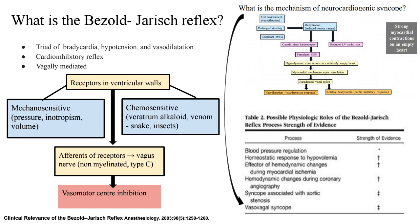What is the Bezold-Jarisch reflex? It is a cardio-inhibitory reflex which is vagally mediated. It is a triad of bradycardia, hypotension, and vasodilatation. When this reflex was first identified, it was described as a triad of bradycardia, hypotension, and apnea. However, in clinical scenarios, apnea does not typically occur, so the triad as of today is bradycardia, hypotension, and vasodilatation.